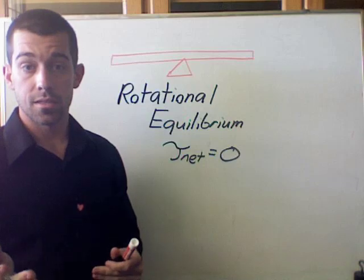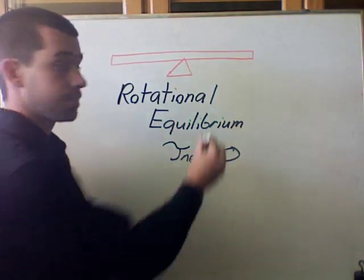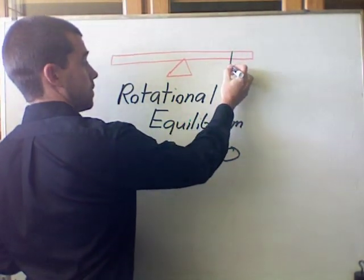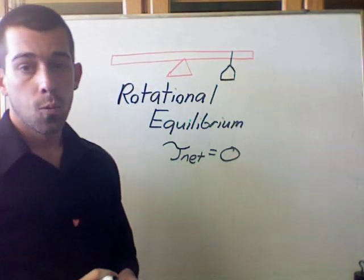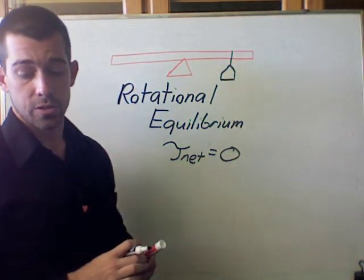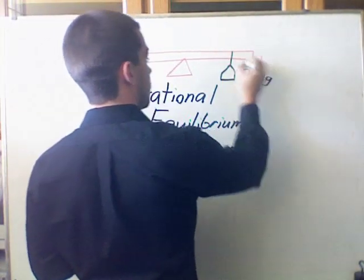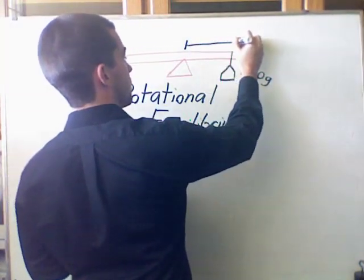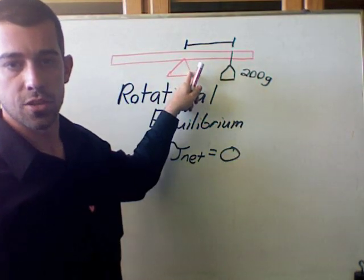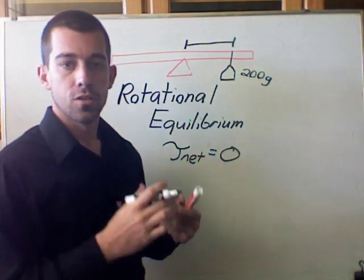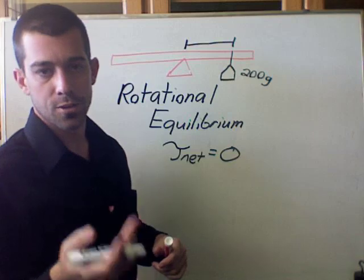But what if we make this a little bit more complicated? What if we add a weight to this meter stick? Well, if I hang a weight to the side of the meter stick, 200 grams we'll say, and we'll put it at a distance from, remember this is my center of rotation here, if I put it at a distance from the center of rotation of 20 centimeters or 0.2 meters.